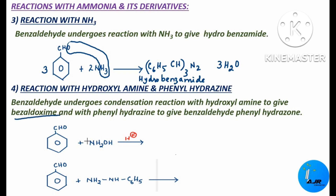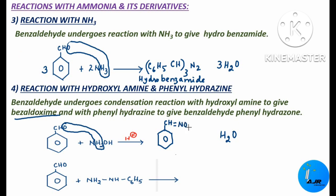This hydrogen and this oxygen combine with the two hydrogen atoms — a water molecule H2O is removed. Write the rest of the product: C6H5 CH double bond N–OH. This is called benzaldoxime.